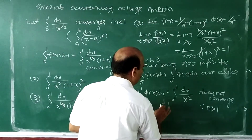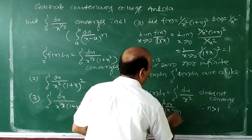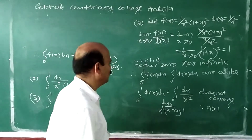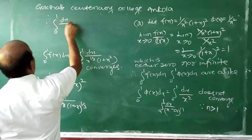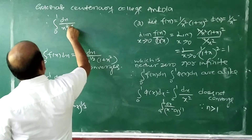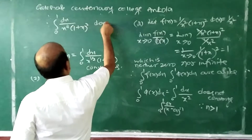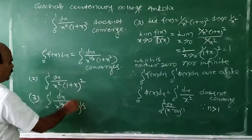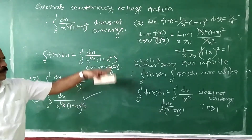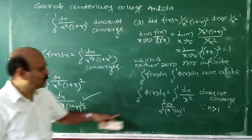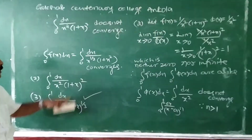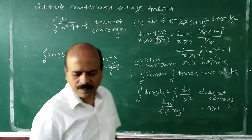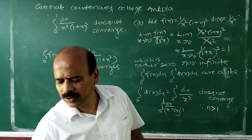Now, ∫0 to 1 dx/x² is of the form ∫A to B dx/(x−A)^N with A = 0 and N = 2, and since N > 1, it does not converge. Therefore ∫0 to 1 dx/[x²(1+x)²] also does not converge. Similarly, the third problem with x^(1/3) can be solved the same way — you will get N = 1/3 < 1, so it converges. If you have any difficulties, you can always ask. Thank you.